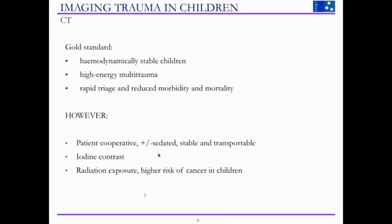Having said that, imaging trauma in children still relies heavily upon CT, and CT is still the gold standard to image these children — especially when they are hemodynamically stable and have undergone a high-energy multi-trauma. This allows rapid triage and reduces morbidity and mortality. However, CT comes with risks: radiation exposure, the need for the patient to be cooperative, stable and transportable, and it requires administration of iodine contrast.